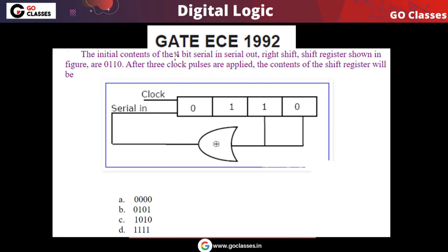Hi everyone, let's solve this question. This is a GATE Electronics 1992 question. This is a simple question from shift registers. A right-shift register is given to you, and the initial content is 0, 1, 1, 0. This is the initial state of the register. After three clock pulses, what is the content of this register? What is the state of this register after three clock pulses?